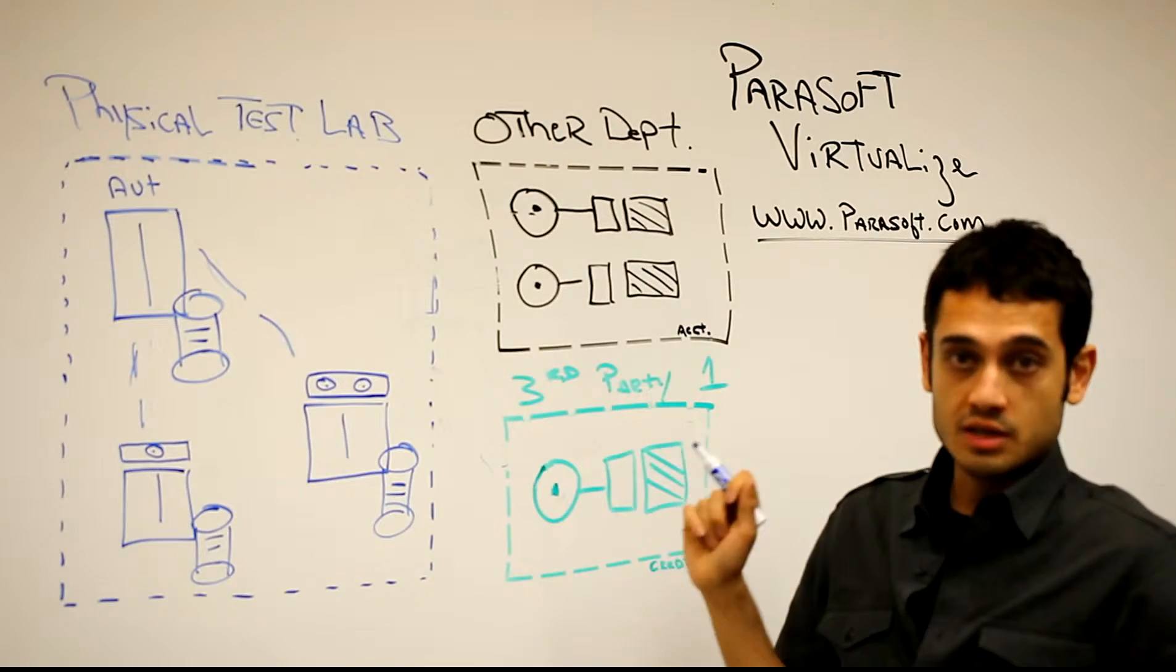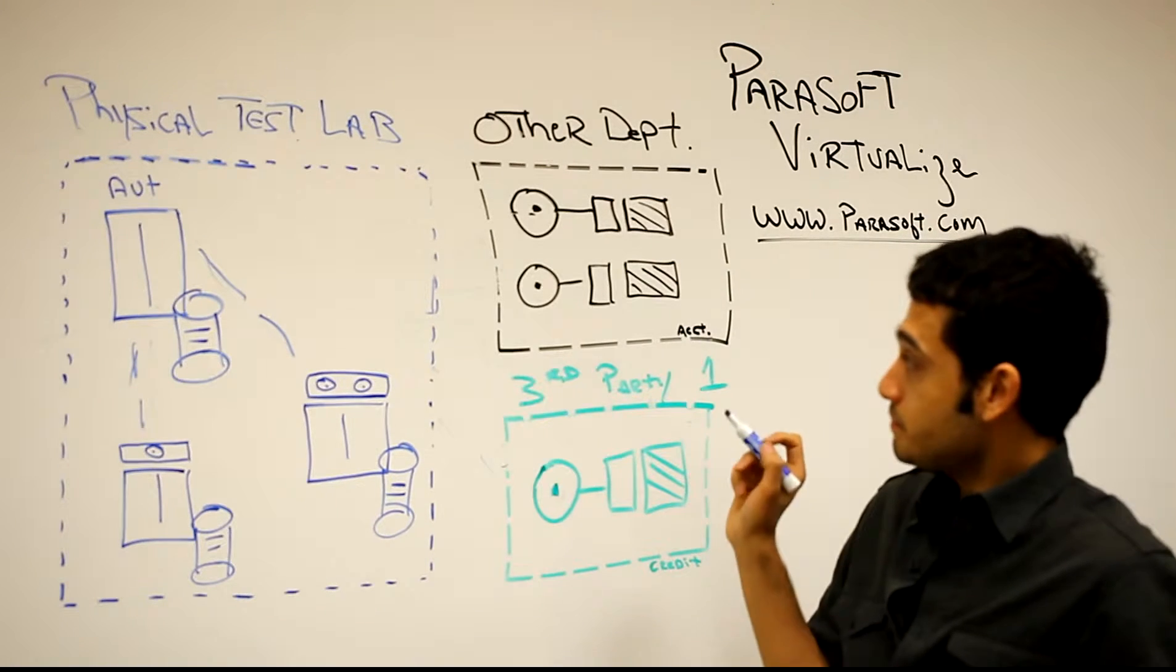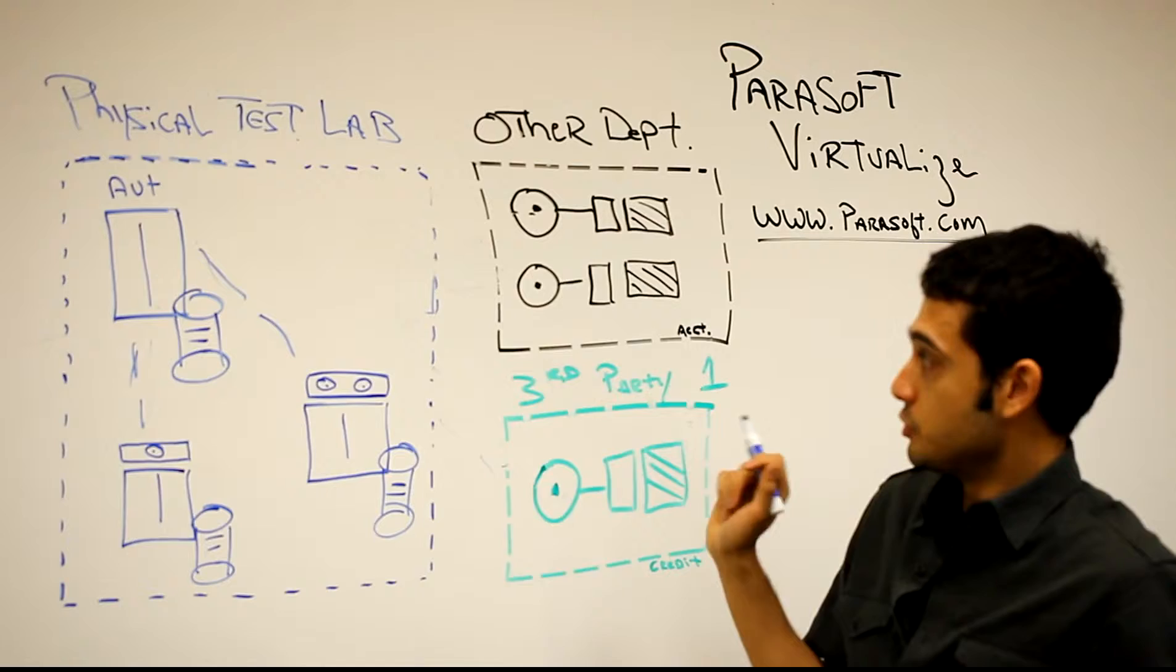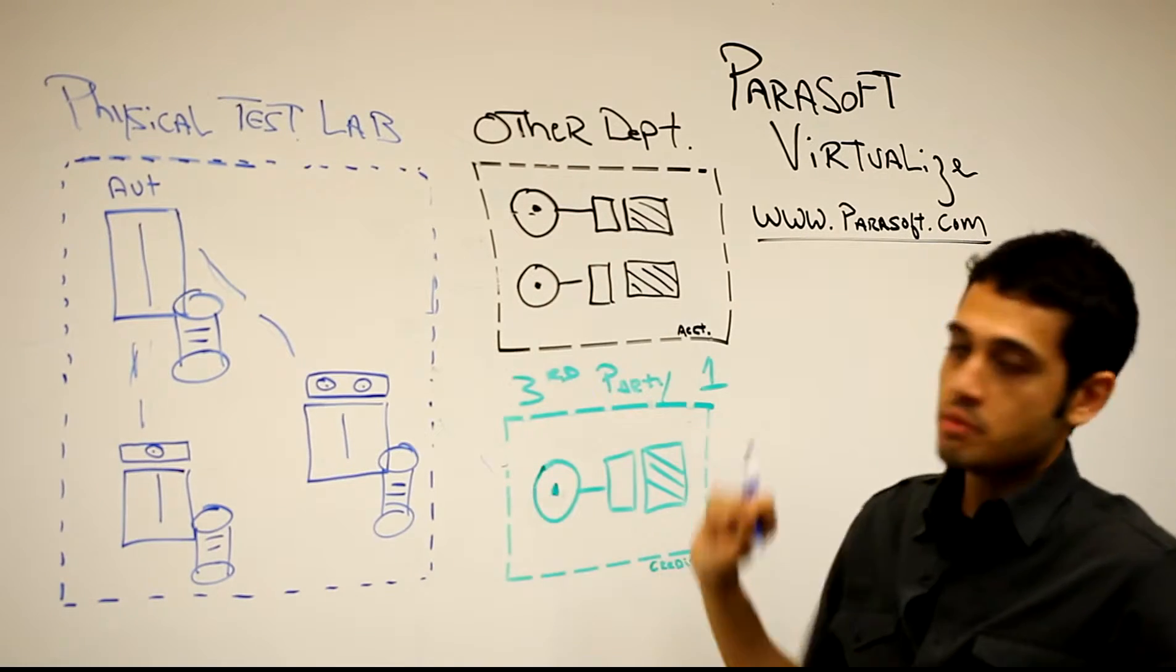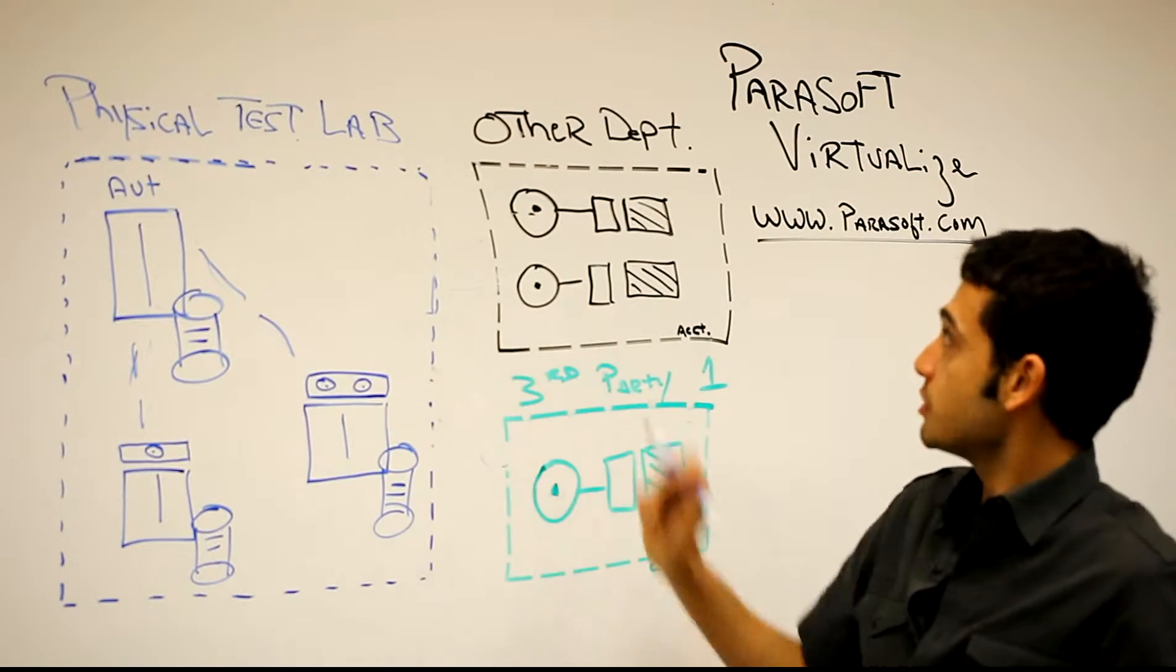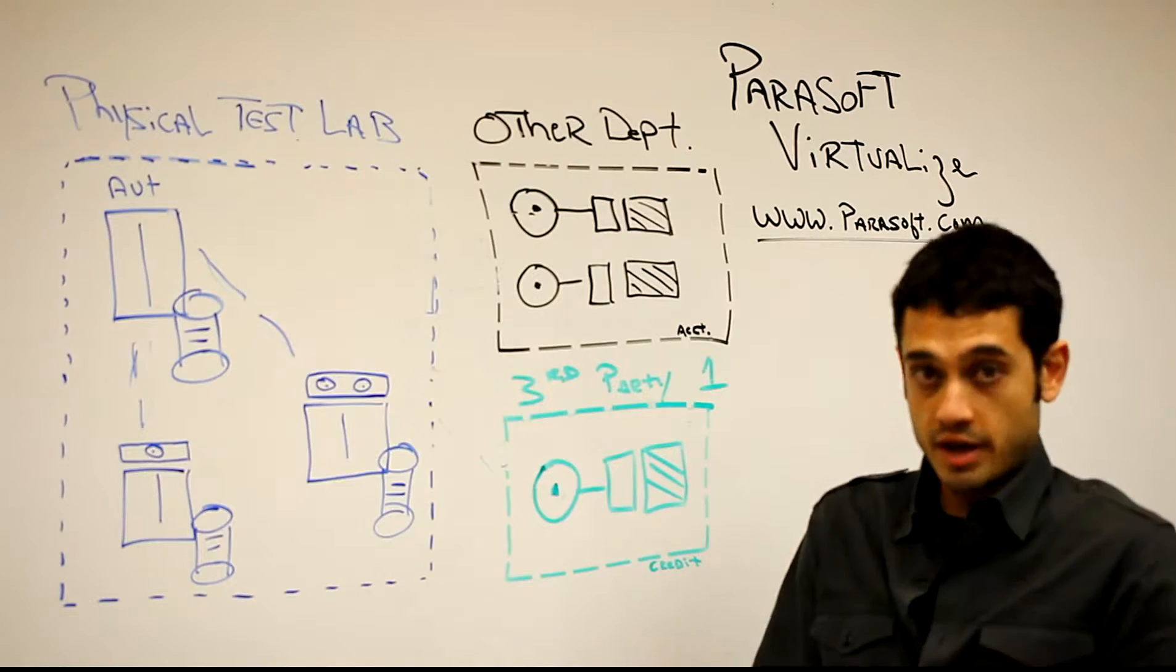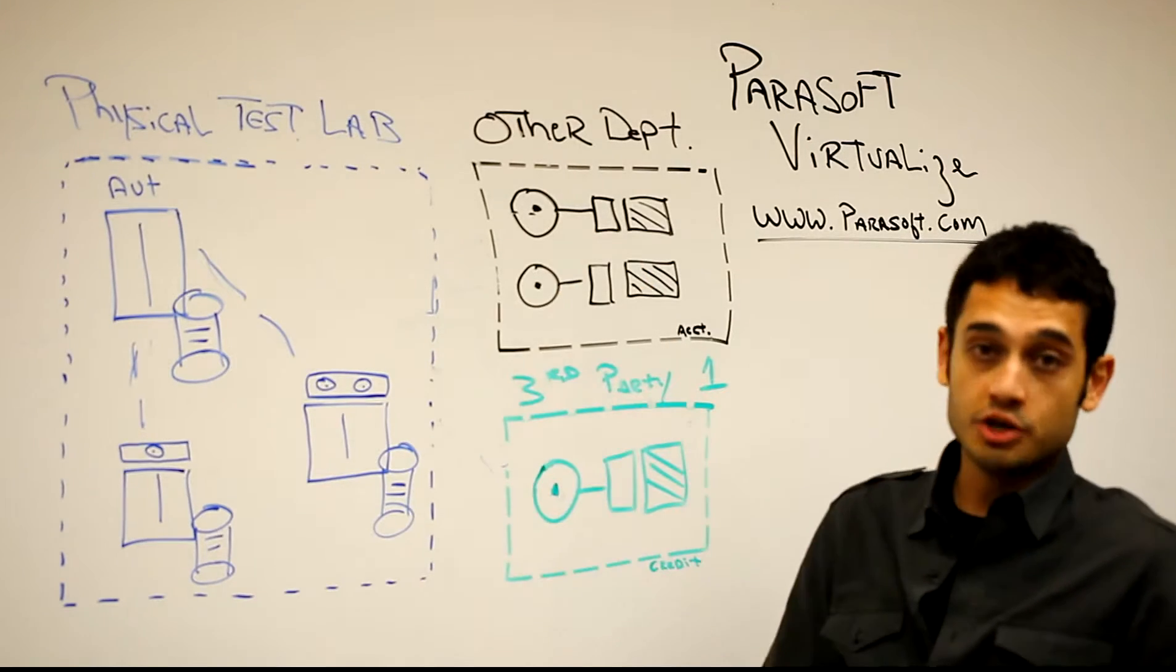How can Parasoft Virtualize help you? The first thing we do is remove the dependencies. We take them out of the picture. The way we do that is we capture traffic going to these other departments and create real-world assets that mimic the application behavior.